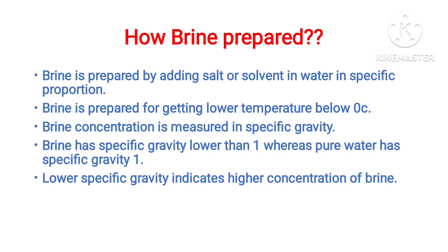Brine is prepared by adding salt in water in a specific proportion. Brine is used for getting lower temperatures below 0 degree Celsius — we use brine where we need temperature below 0 degree Celsius. Brine concentration is measured using specific gravity with a hygrometer.